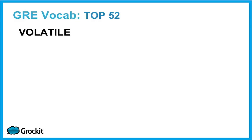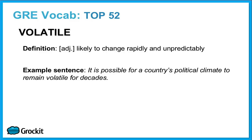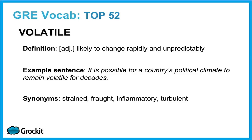Our twenty-sixth word is volatile. This is an adjective. It means likely to change rapidly and unpredictably. It is possible for a country's political climate to remain volatile for decades. Synonyms: strained, fraught, inflammatory, and turbulent.